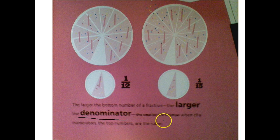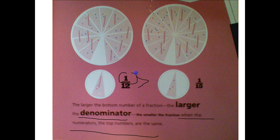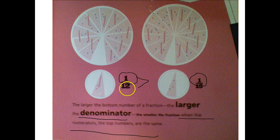So again, this is the key part. When the numerators are the same, we have one-twelfth is greater than one-fifteenth, because there's a one here and a one here. So we can tell that our denominator, even though twelve by itself is smaller than fifteen, the fraction is really bigger because the pieces are larger.